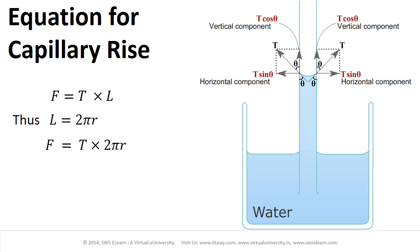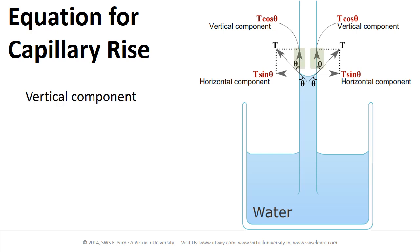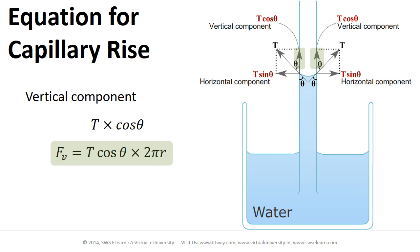However, the effective force for lifting the water vertically in a capillary tube is due to only the vertical component of surface tension. The horizontal component of surface tension is given by T sinθ. The horizontal components are equal and opposite and hence they cancel out, resulting in net zero force. The vertical component responsible for the rise of water is given by T cosθ.